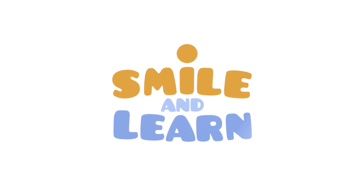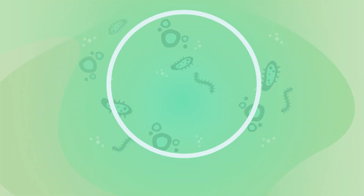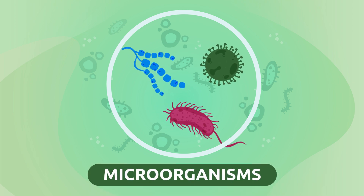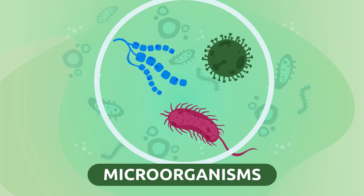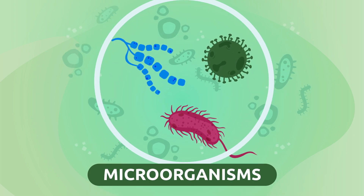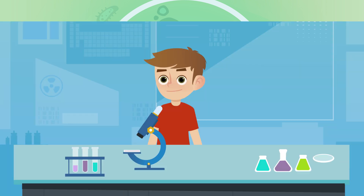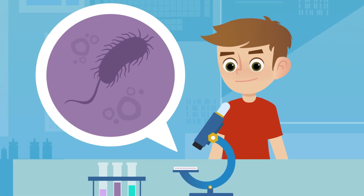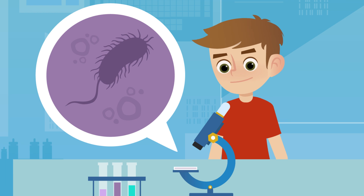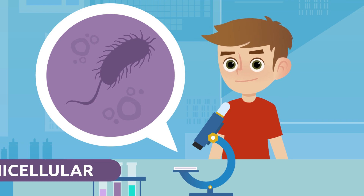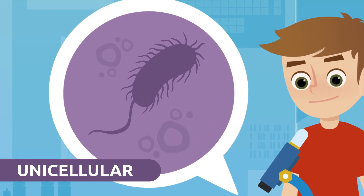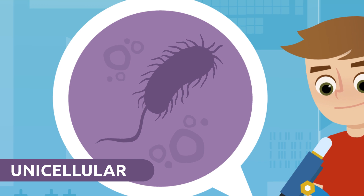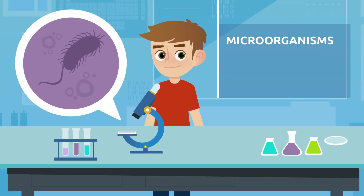Smile and Learn. Do you know what microorganisms are and how many types of them are there? Let's learn everything about them! There are organisms that consist of one single cell, called unicellular organisms. These organisms are very small — that's why we call them microorganisms.